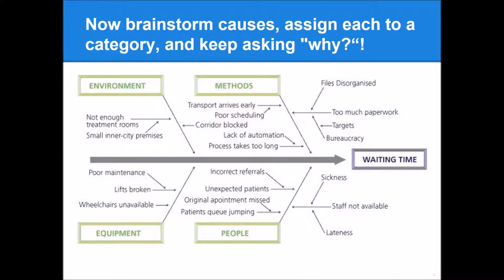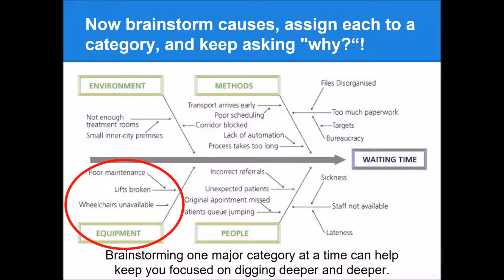And then for each of those causes that we think of, we dig down deeper and deeper by asking why. Why might this be a problem? Why might this be a problem? Further and further down. It's helpful when brainstorming to try to brainstorm about one broad category at a time, and to really try to flesh out all the potential contributors in that category that you can.